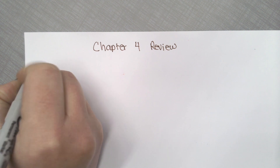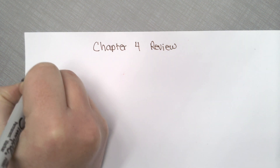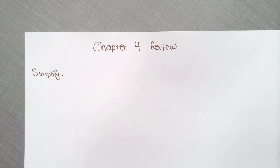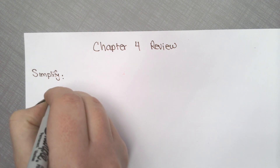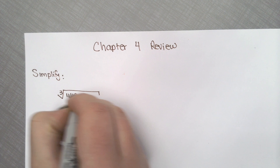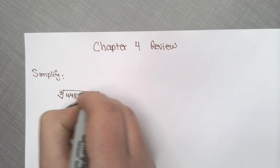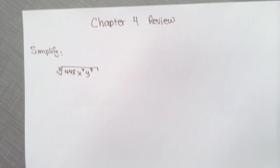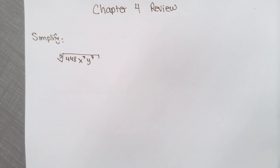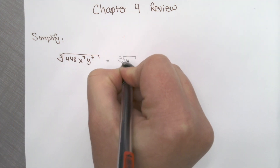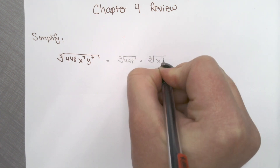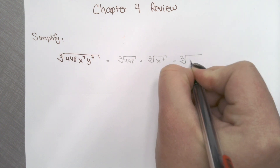Let's go ahead and start off with simplifying. There are about four questions that will be instructed to simplify. First one is a radical — a cube root of 448 times x to the seventh power, y to the seventh power. Now there are different ways of doing this. If you want to keep everything as a radical, that's fine. I usually convert mine into fractions, especially when it comes to the variables. So I'm going to split everything up. I got the cube root of 448, times the cube root of x to the seventh power, times the cube root of y to the seventh power.